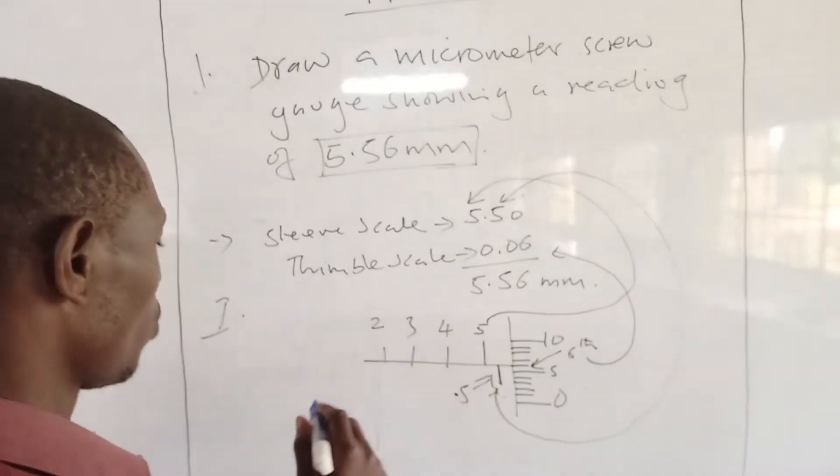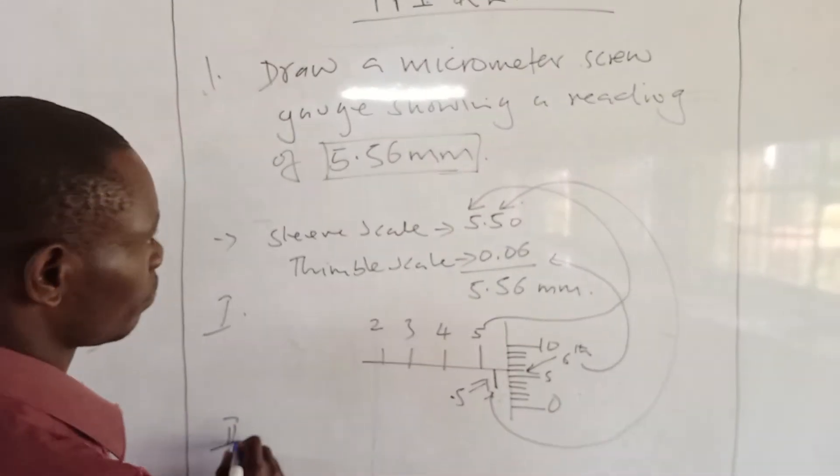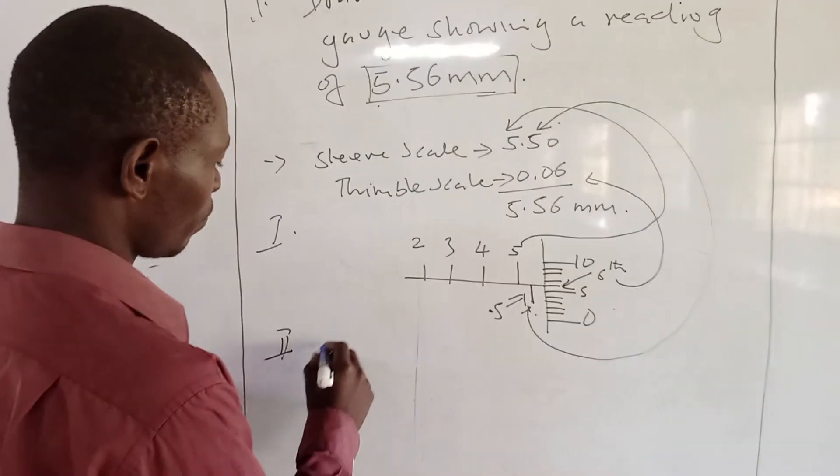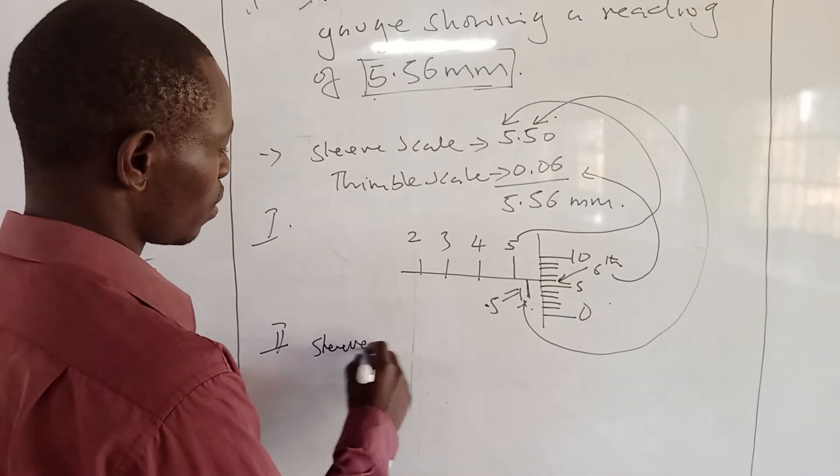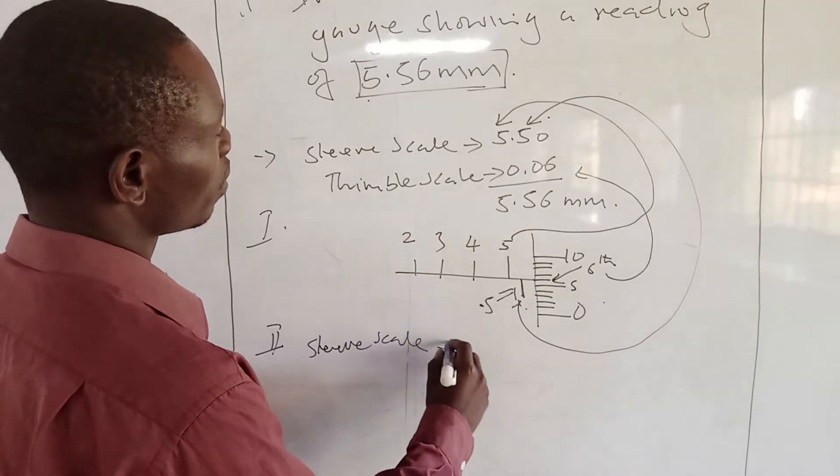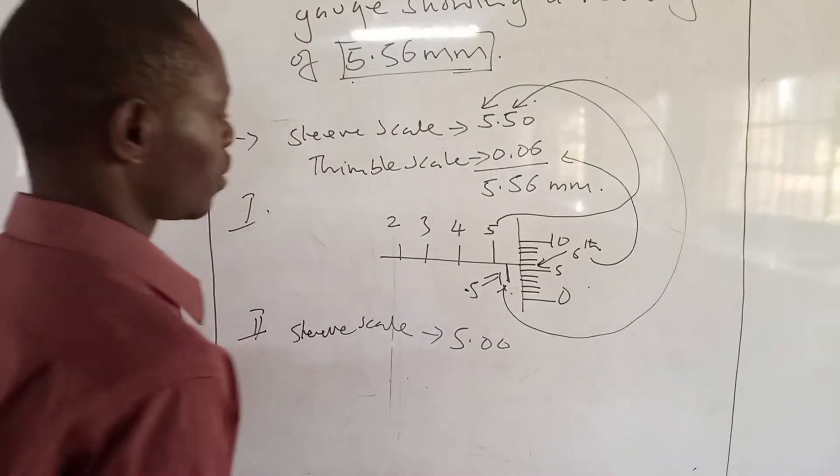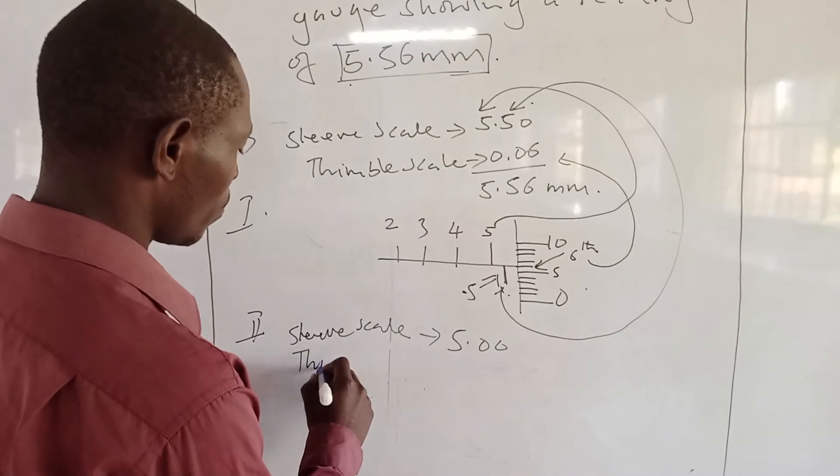Now in part two, we can say that from this reading, we can also say that the sleeve scale can be 5.00 and then thimble scale to be 0.56.